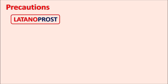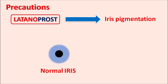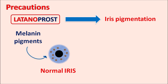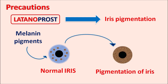One important precaution with latanoprost is iris pigmentation. In the normal iris there is no pigmentation, but with use of latanoprost, melanin deposits slowly accumulate within the iris and can eventually produce complete pigmentation. However, this is a reversible side effect — whenever the drug is stopped, the pigmentation can be reduced. Care should be taken to monitor any iris pigmentation after use of latanoprost.